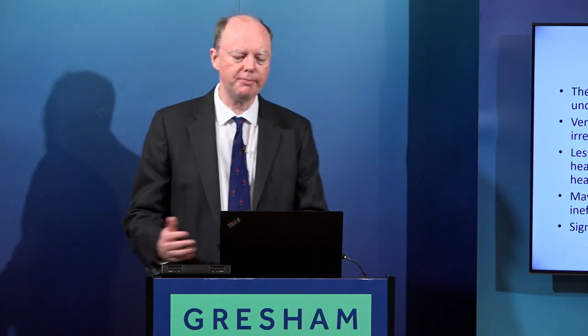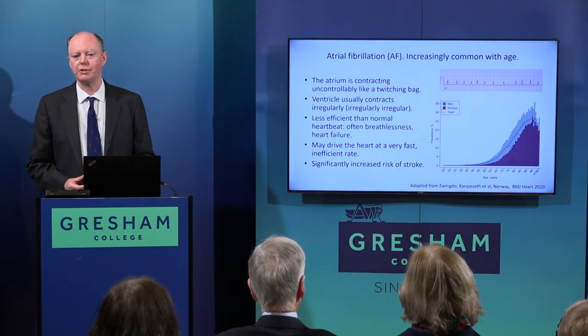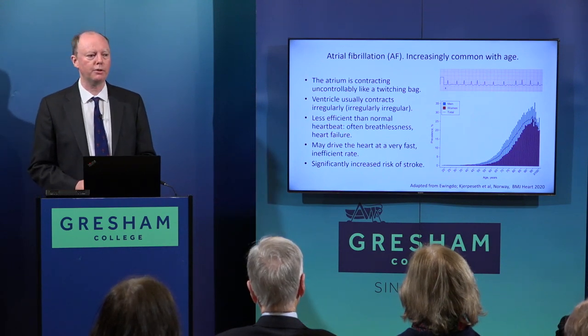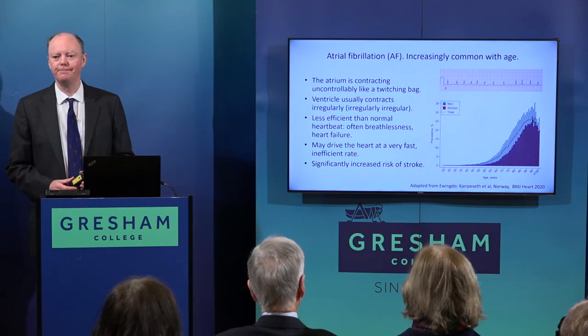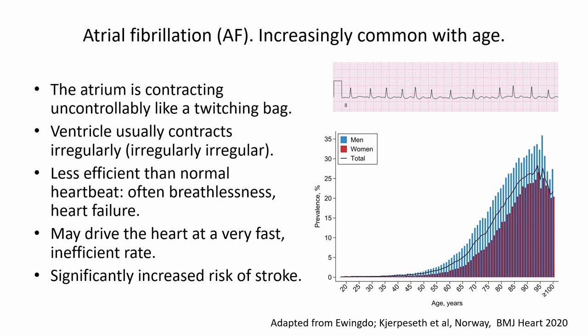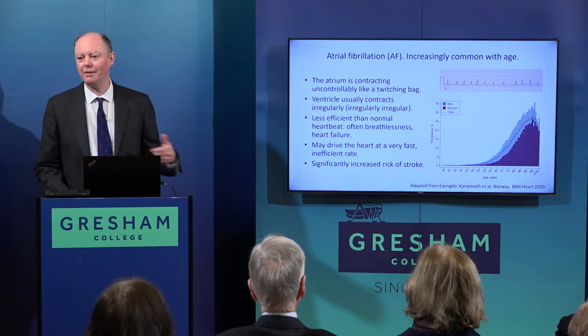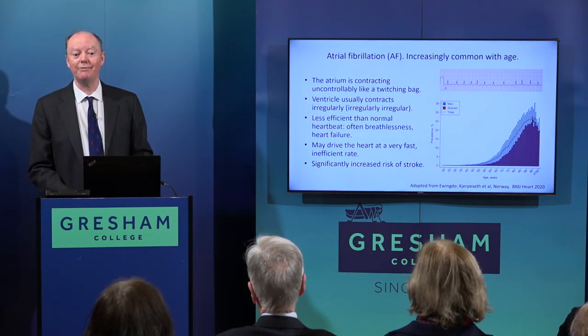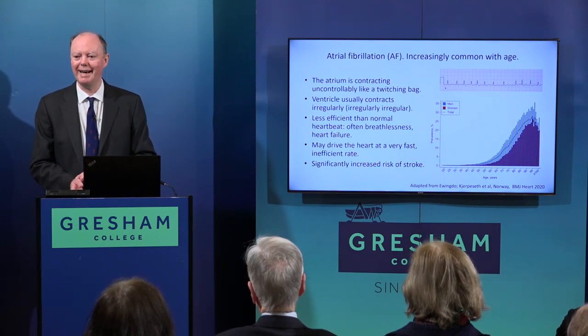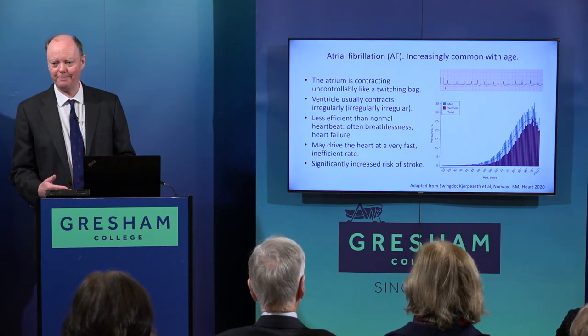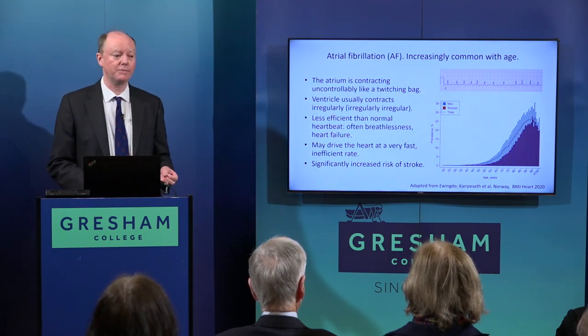Moving on from bradycardias to things that mainly cause the heart to go too fast: the commonest of these, which many people will have by the time they reach older age, is atrial fibrillation. In AF, the top part of the heart, instead of beating in a nice steady way, basically goes rogue and twitches like a bag — moving but not in any coordinated way, not producing a proper impulse. This means the ventricle doesn't know what to do: the atrium sends impulses through in a very irregular way, resulting in what's called an irregularly irregular pulse — sometimes fast, sometimes slow, with no predictability — which is often quite inefficient.